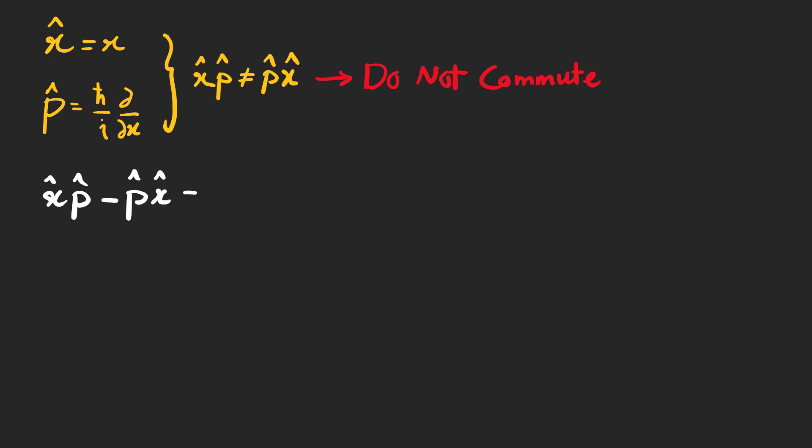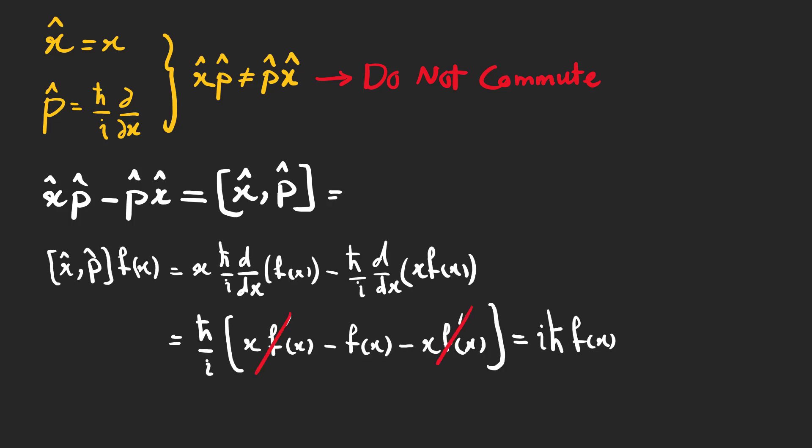Let's find this expression. Pay attention that they are operators and should be calculated acting on a test function. By using this operator on a test function f of x, we see that this expression is equal to i h-bar. And is the equation for commutation relation for x and p operators.